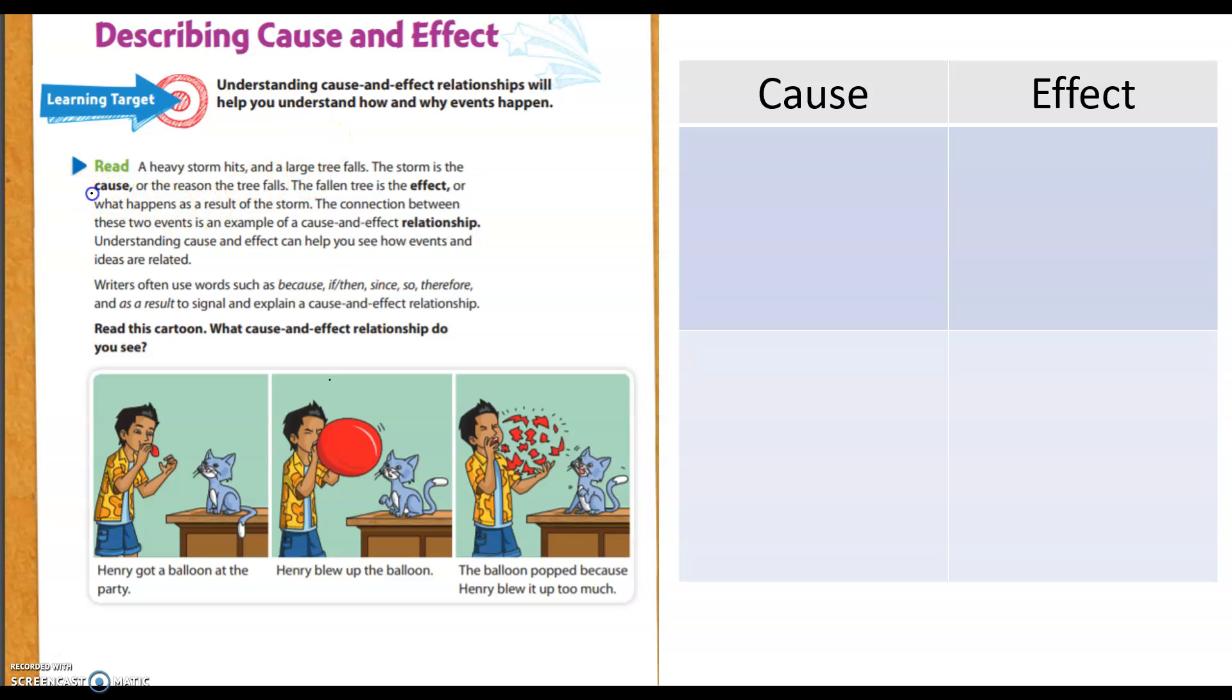So cause is the reason something happens. Cause is the reason. The effect is the result. The connection between these two events is an example of a cause and effect relationship. Understanding cause and effect can help you see how events and ideas are related.